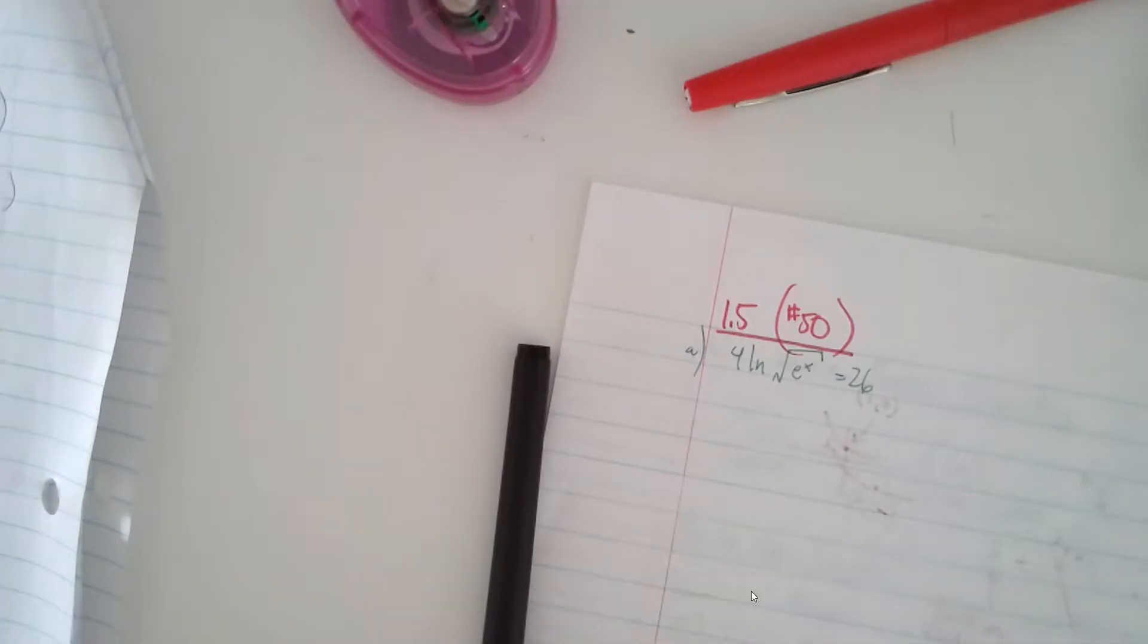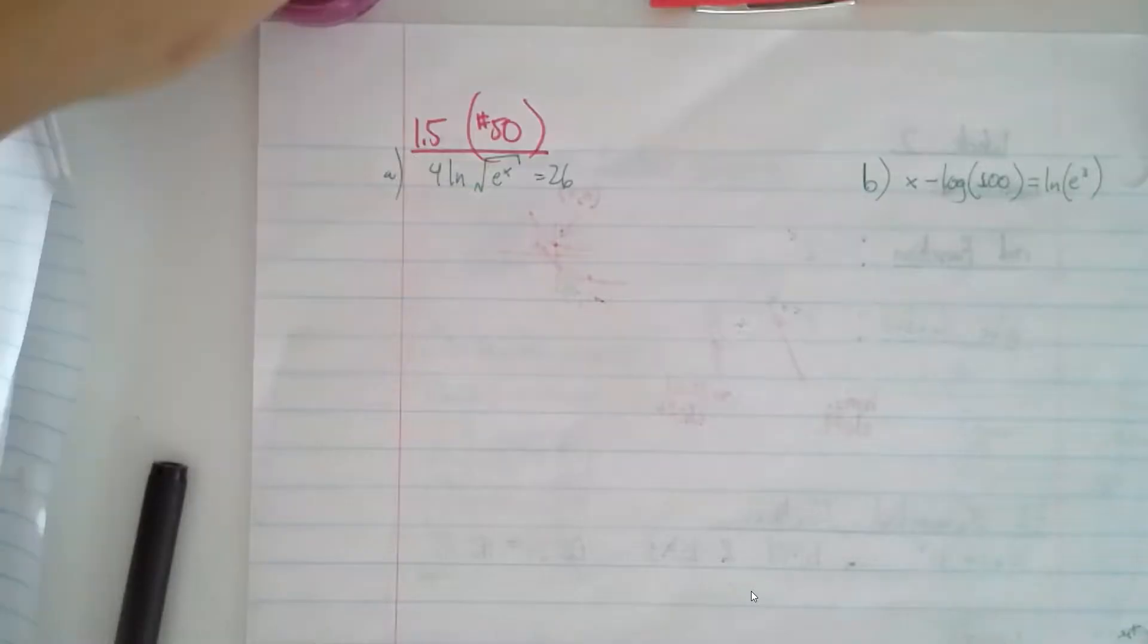Hey classes, it's me, Mr. Wee. I'm going to be here to go over some stuff from 1.5. It's number 50 on 1.5, technically, but I'm going to go over four different review problems for properties of log.